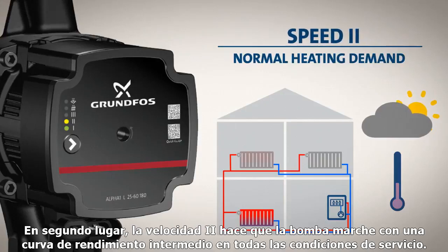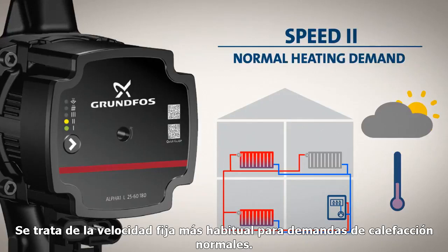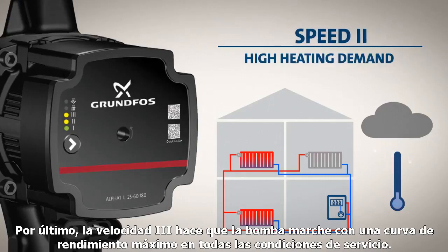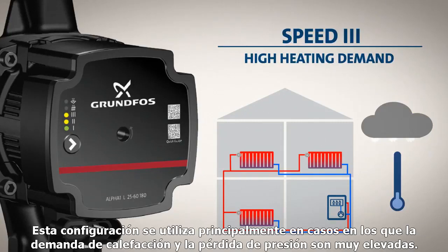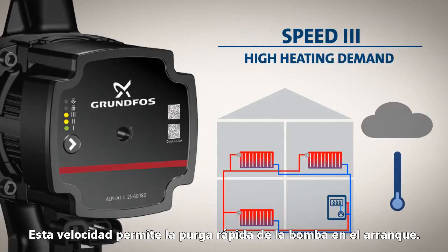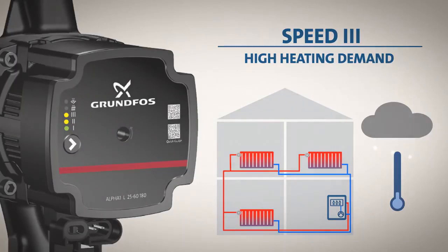Secondly, speed 2 sets the pump to run on an intermediate curve under all operating conditions. This is the most common fixed speed for normal heating demands. And finally, speed 3 sets the pump to run on a maximum performance curve under all operating conditions. This setting is mainly used in situations where the heating demand and the pressure loss are very high. This speed also allows quick venting of the pump at startup.